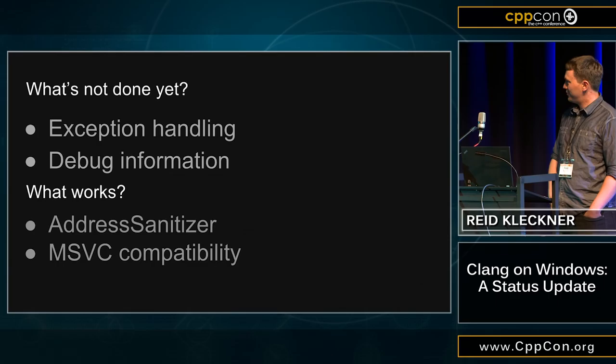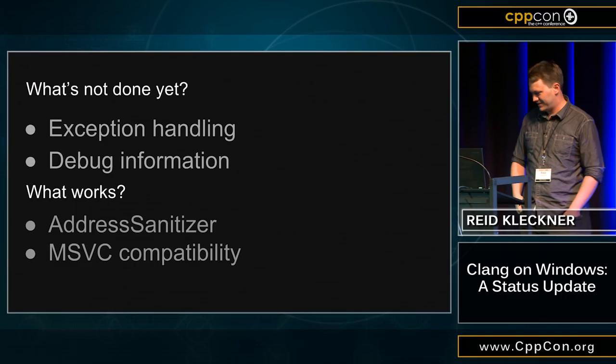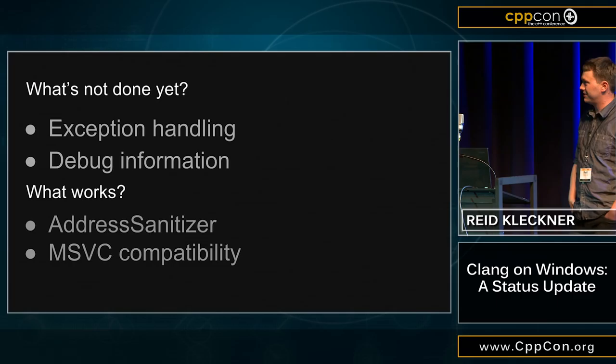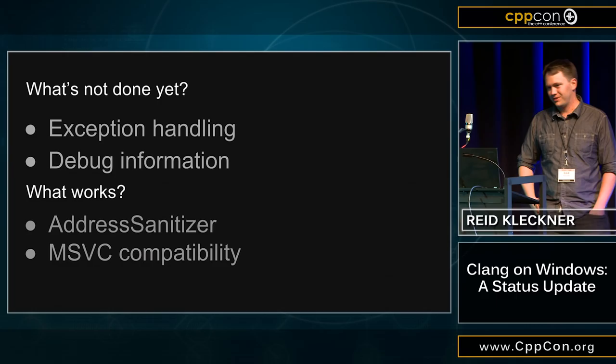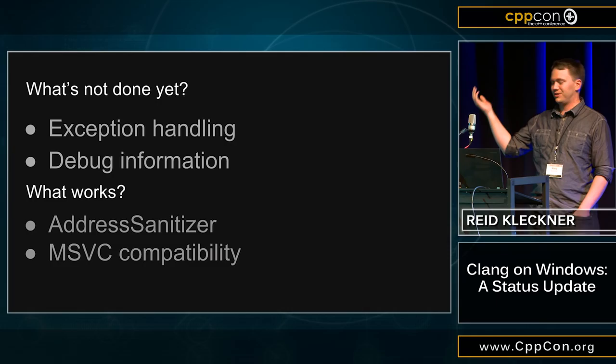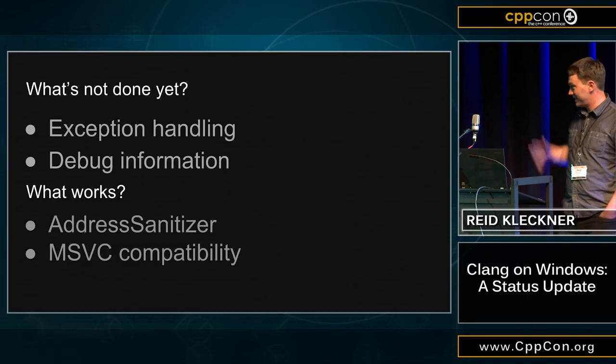The main thing is that we basically don't have exception handling done yet. That's what I've been working on along with one of my colleagues pretty consistently — it's what I've been doing for several months and will probably continue to do for a while. The other missing piece that a lot of people will need before they can use Clang on Windows for their day-to-day developer experience is debug information.